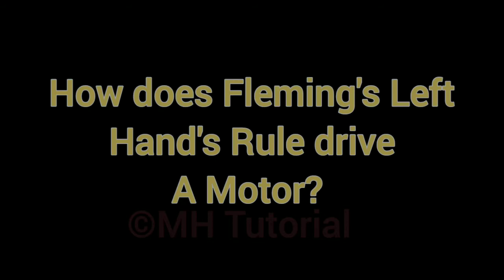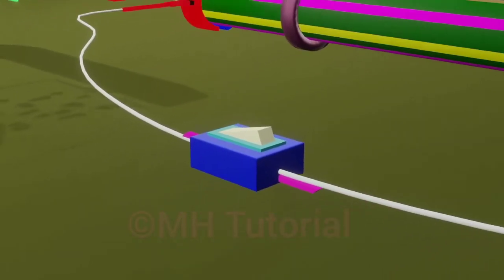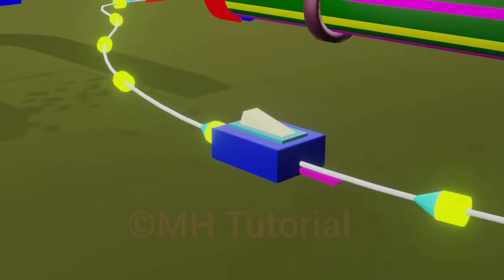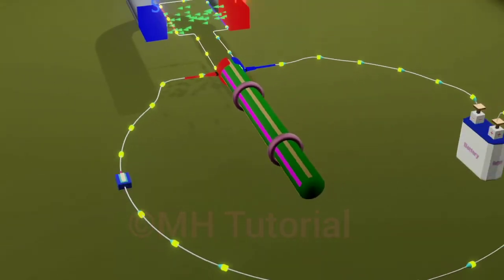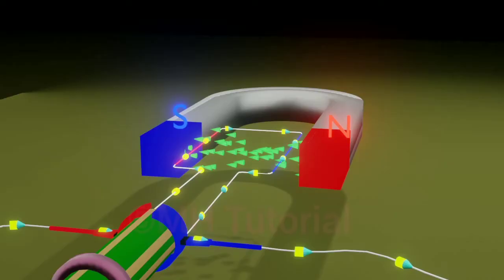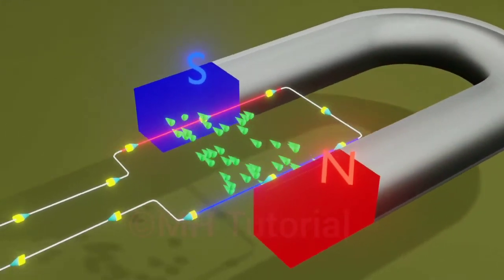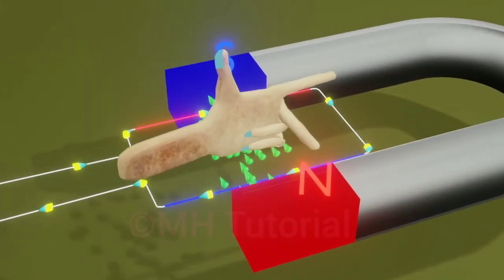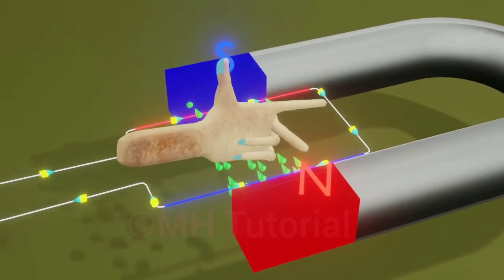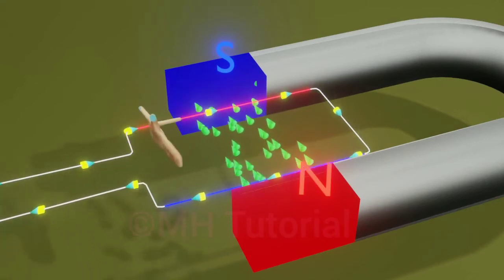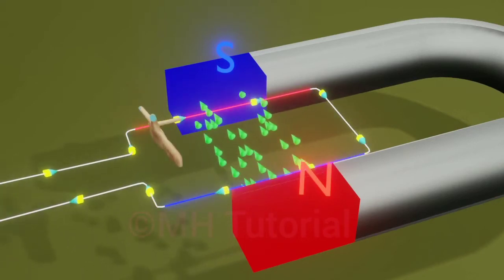How does Fleming's left hand rule drive electric motors? If the motor is switched on, the electrical current will start. Applying Fleming's left hand rule to the arm near the south pole, we will see that an upward force is acting on the arm.